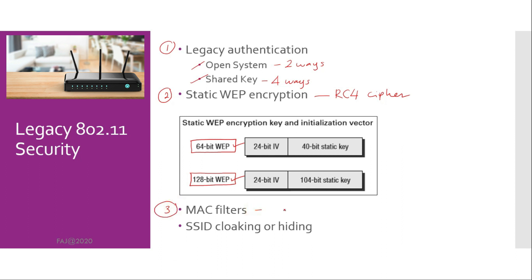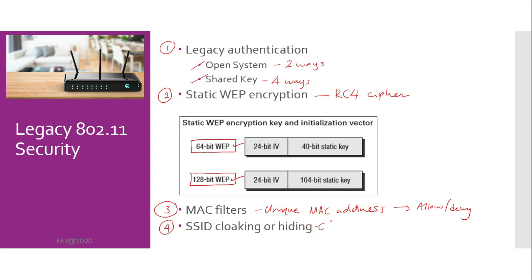MAC filters. Every 802.11 radio has a unique MAC address, and most vendors provide MAC filtering capabilities on their access points. MAC filters can be configured to either allow or deny traffic from specific client MAC addresses to associate and connect to an access point. SSID cloaking or hiding. Access points typically have a setting called closed network or broadcast SSID. By either enabling a closed network or disabling the broadcast SSID feature, you can hide or cloak your wireless network name. The idea is that any client station that does not know the SSID will not be able to discover the wireless LAN and therefore will not associate.